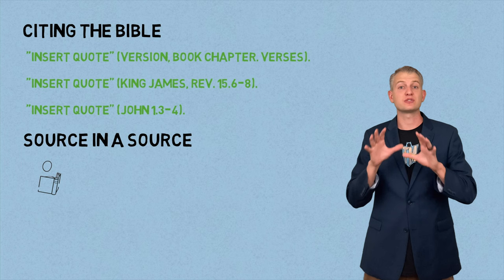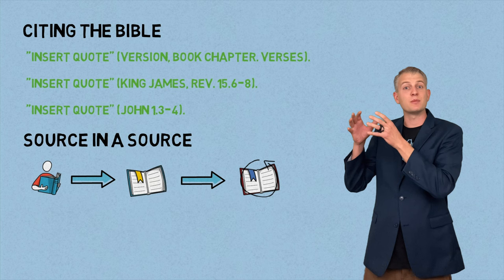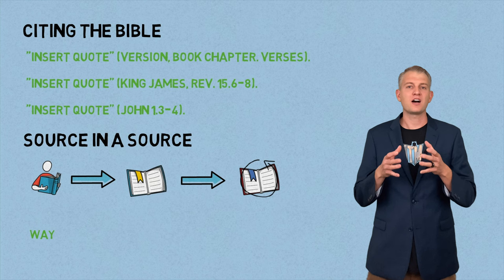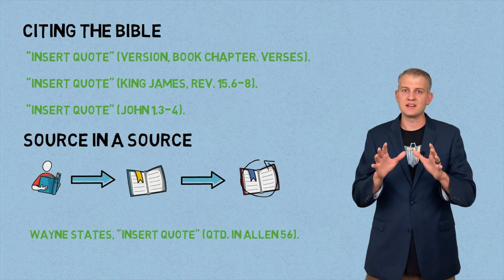Sometimes you're citing a source within a source. Let's say you're reading a book and that author uses a quote from a different book. If you want to use that quote in your writing, it's best to find that original book or article and cite it directly. But if that's not possible, start by citing the last name of the author of the actual quote. In the parentheses, have qtd. in and the last name of the author of the book you're reading, plus the page number.